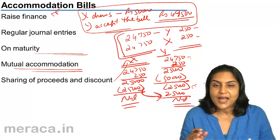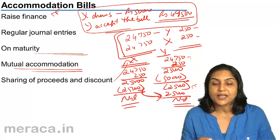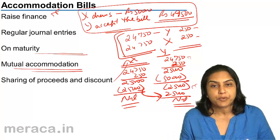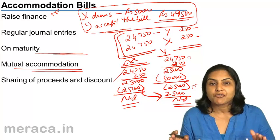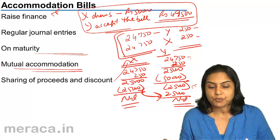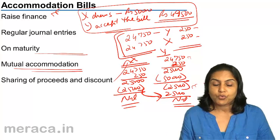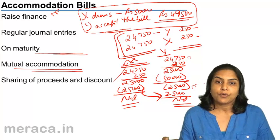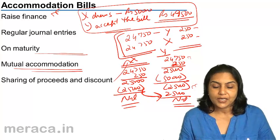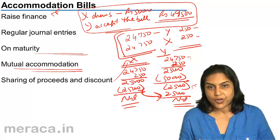This is a typical arrangement in the case of accommodation bills. The proceeds and the discount are shared in the same proportion. If the proportion for sharing the proceeds is 1:3, the discount would also be shared in the ratio of 1:3.